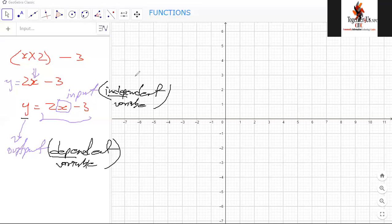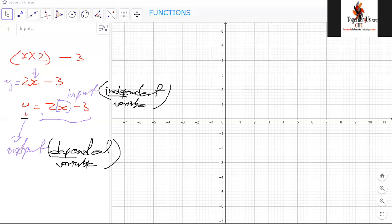So in a simple way, if we want to nicely describe what a function is or explain to someone what a function is, we can say a function is just a rule that explains or represents a process. A process in which there is an input and there is an output. So you put something, there is something that comes out.